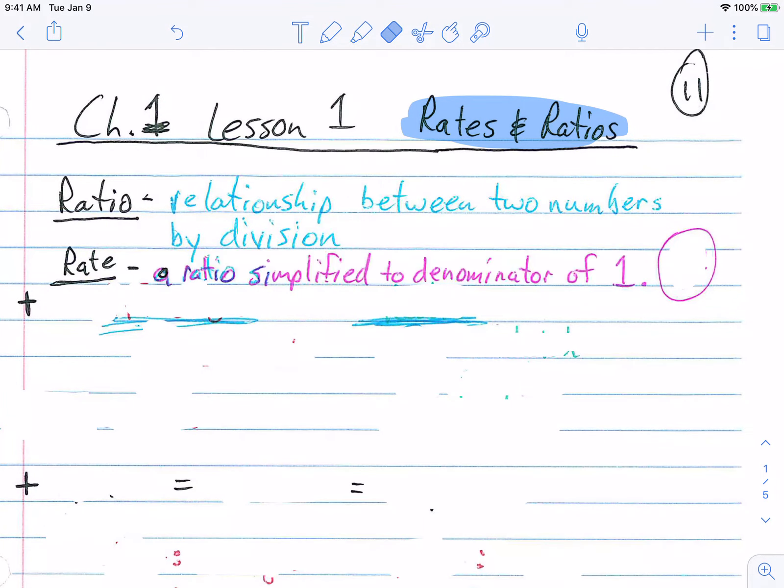Now a rate is a ratio simplified to a denominator of one. So that's a rate. And usually a rate will have time on it. It has some sort of time, but usually at least one on the bottom. For example, 50 to one.